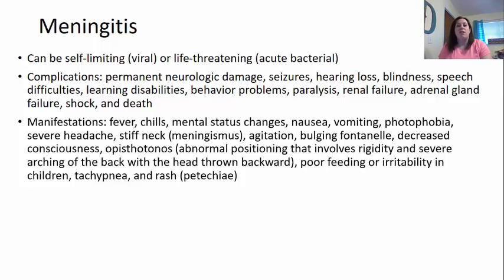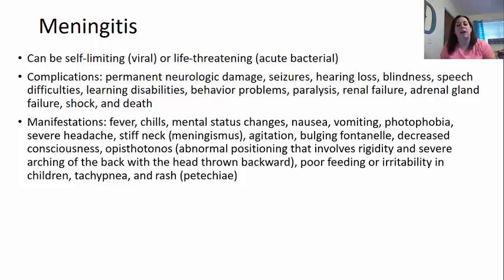Other signs include agitation. If it's in a baby, you may see bulging fontanelles and decreased consciousness. You may also see what we call opisthotonus — abnormal positioning that involves rigidity and severe arcing of the back with the head thrown backwards. There can also be poor feeding or irritability in children, a sinusoidal effect, and rash — also called petechiae — on the skin.